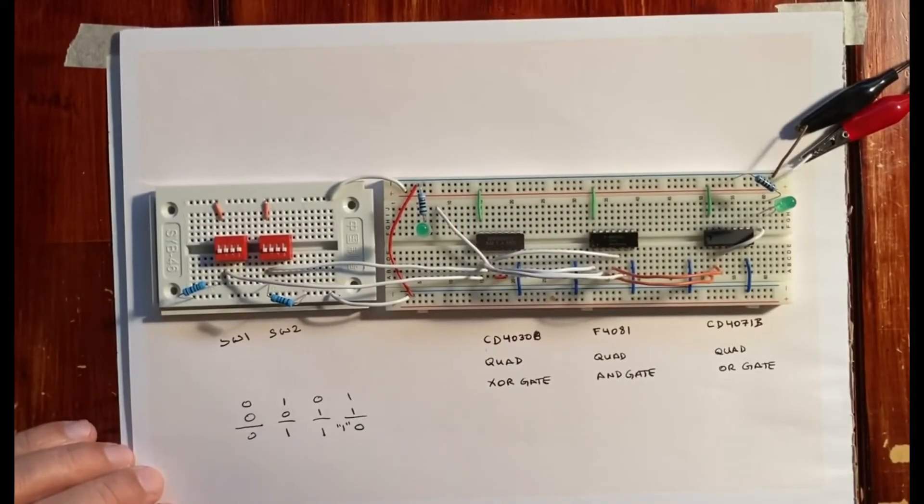A 1-bit adder. So switch 1 and switch 2 will have our values to add. Over here we have chip CD4030B which is a quad XOR gate. This one is the F4081, a quad AND gate. And this last one is a quad OR gate, the CD4071B.